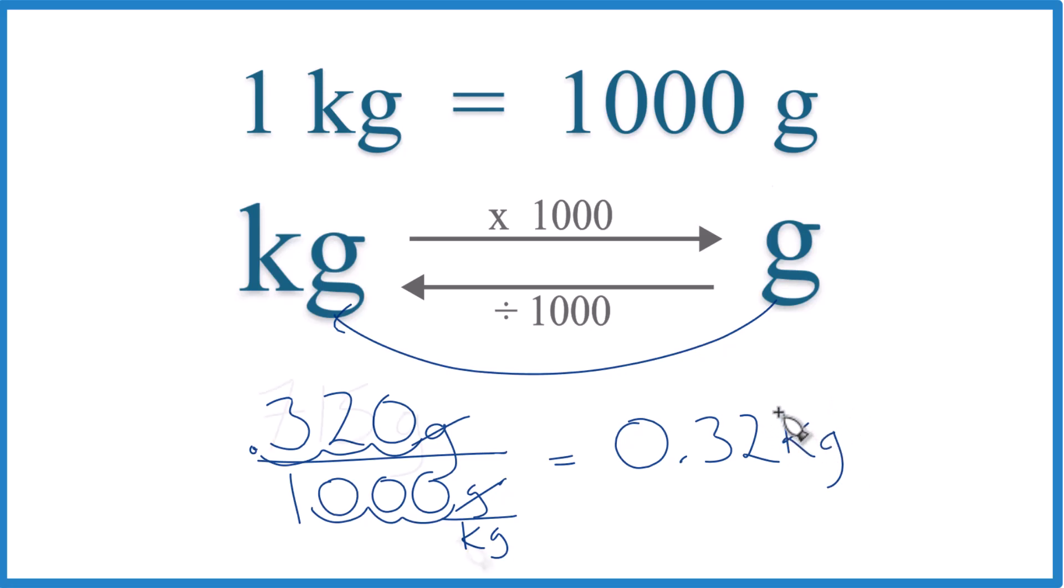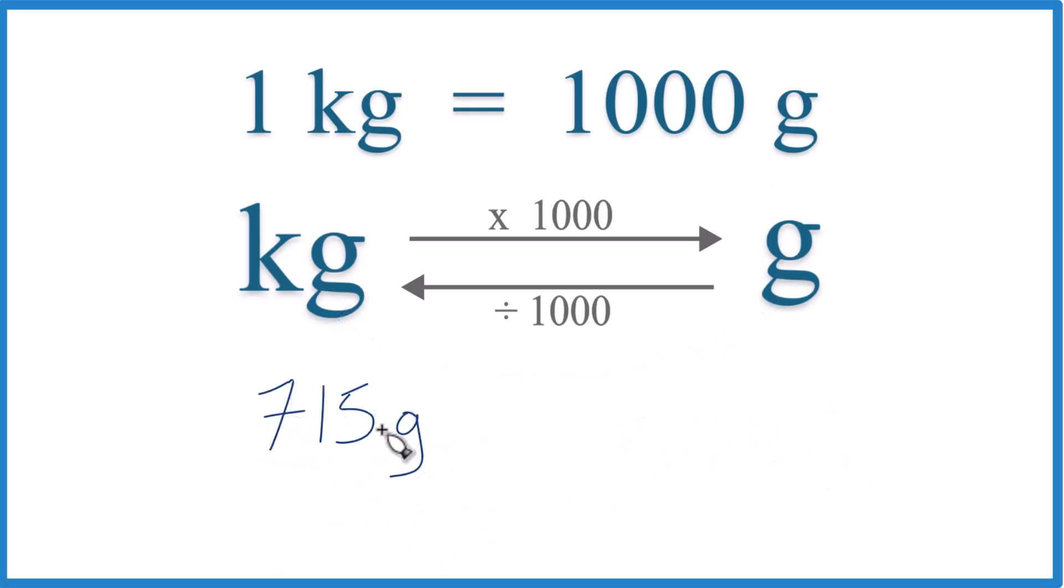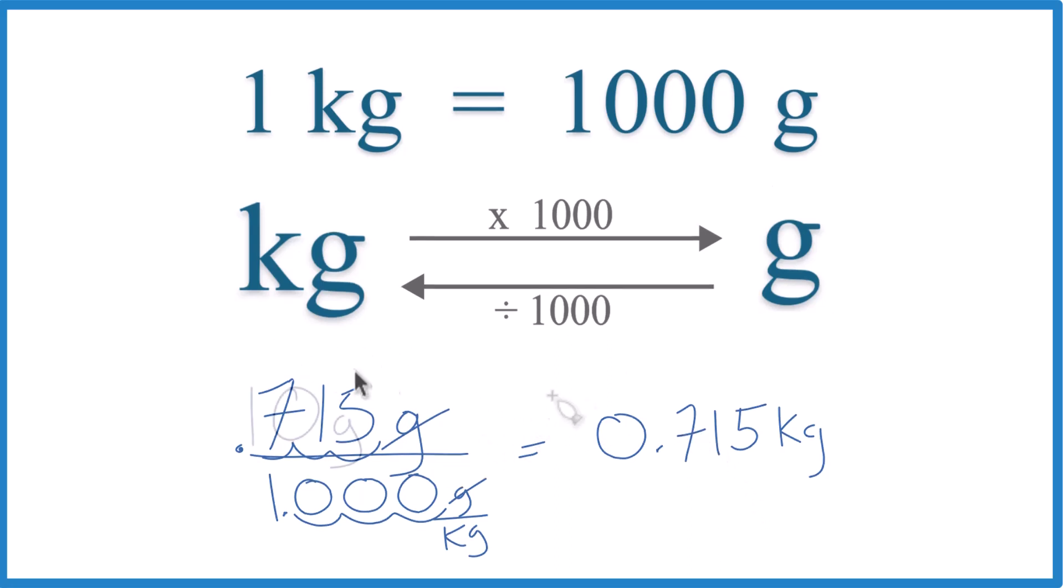Pause and give this one a try. Convert 715 grams to kilograms. So grams to kilograms, divide by 1,000 grams per kilogram. Those are gone. 1, 2, 3. So we have 0.715 over 1. That just gives us 0.715 kilograms. So let's wrap up with two more practice problems, and you'll be a pro at converting grams to kilograms and kilograms to grams.